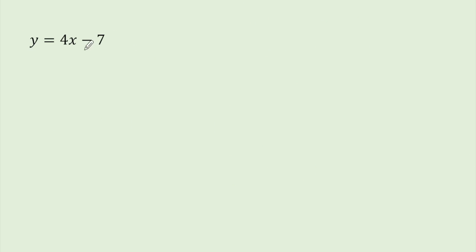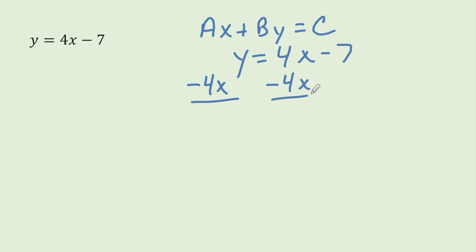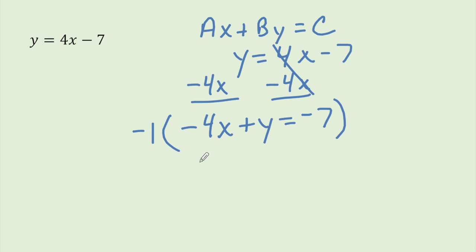Now let's take an equation in slope-intercept form and write it in standard form, ax plus by equals c. We subtract 4x from both sides, moving the x's and y's to one side of the equation. This gives us negative 4x plus y equals negative 7. Since the beginning is not supposed to be negative, we multiply everything by negative 1, giving us 4x minus y equals 7. That is converted to standard form. I hope you found this video informative, and I will see you on the next video.